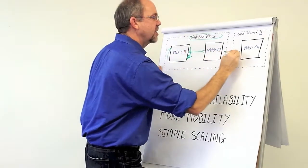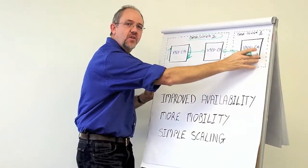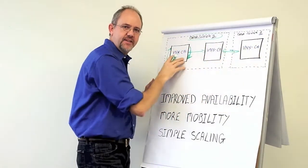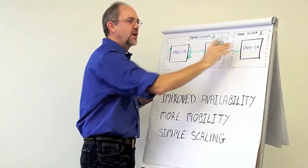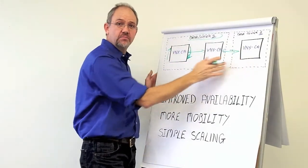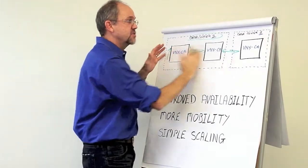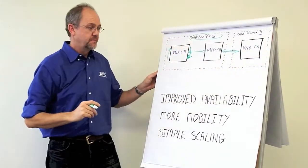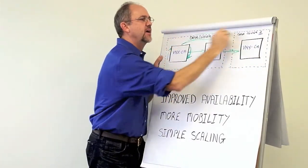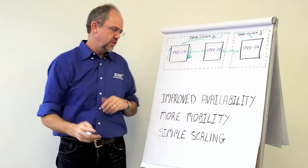Or, you can move data non-disruptively between data centers. So, you've got a lot higher availability model. Think of Oracle RAC, one instance across data centers. VMotion from here to that data center without storage vMotion.